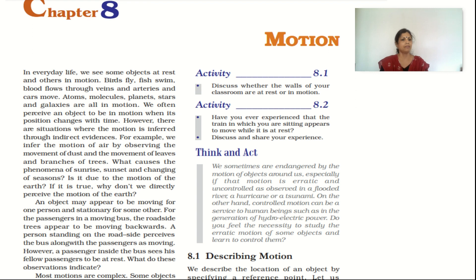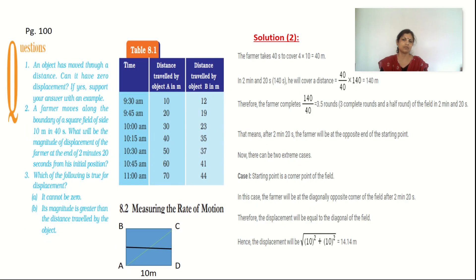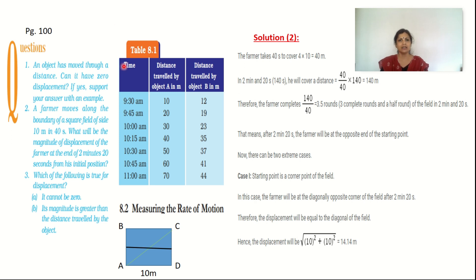On page number 100 of your textbook we learned the concepts of distance, displacement, speed, velocity, and acceleration. Based on these, the textbook gives certain numericals. There is a table between time and distance. The first column shows time with equal intervals of 15 minutes: 9:30, 9:45, 10:00, 10:15, 10:30. In the first column of distance, the change in distance is equal — a change of 10 meters — so this is uniform motion: equal distance covered in equal intervals of time.